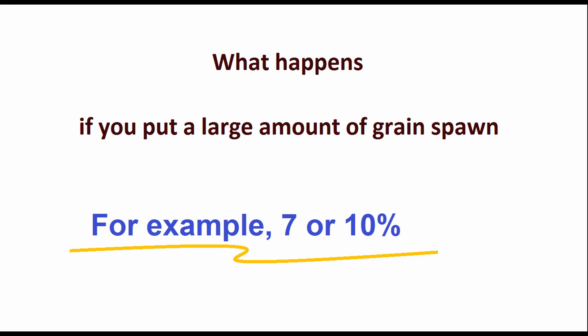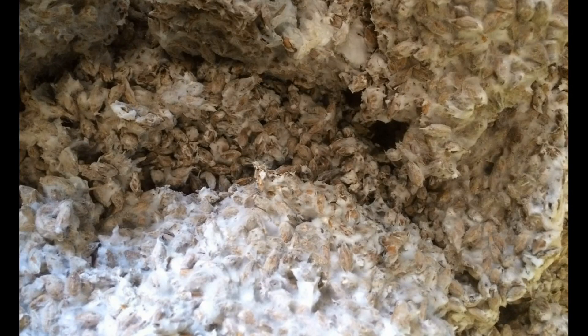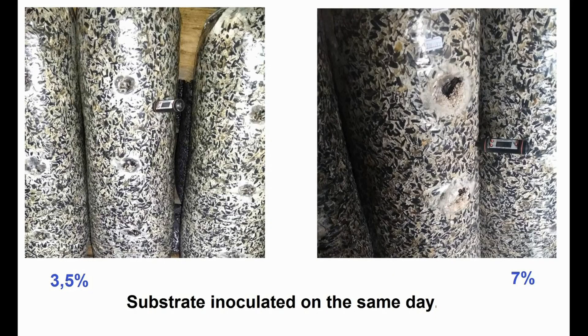Let's see what happens if we put in more grain spawn. If it is of high quality and active, an increased dose will cause the appearance of primordia a couple of days earlier. You need to consider what is more important to you. When you put more grain spawn, the cost of the mushroom block increases. But if the primordia appear two days earlier, you will empty the incubator faster. It may be more profitable for you to empty the incubator earlier so that you can make the substrate more often.